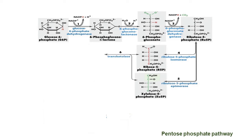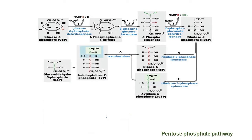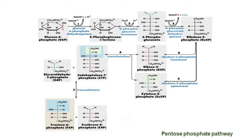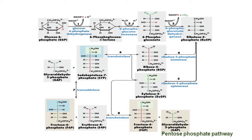Transketolase can convert ribose-5-phosphate and ribulose-5-phosphate into glyceraldehyde-3-phosphate and sedoheptulose-7-phosphate, which are further catalyzed by transaldolase for conversion into erythrose-4-phosphate and fructose-6-phosphate. Transketolase can also catalyze xylulose-5-phosphate and erythrose-4-phosphate into glyceraldehyde-3-phosphate and fructose-6-phosphate. All these reactions of the non-oxidative phase are reversible in nature.